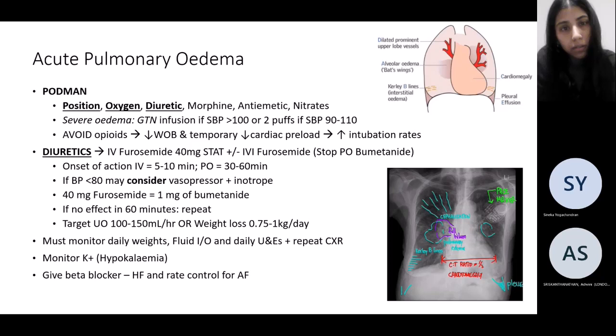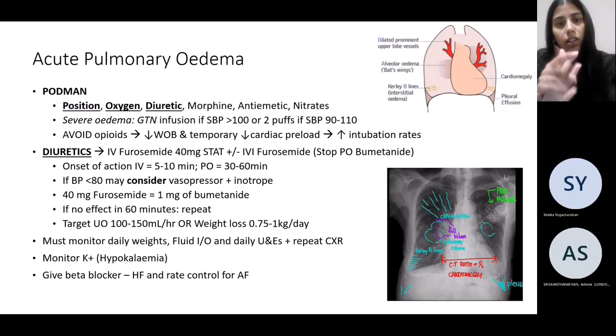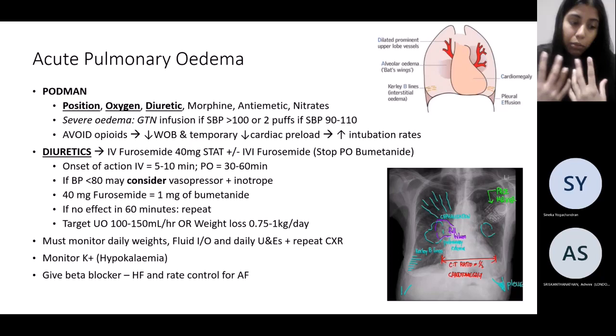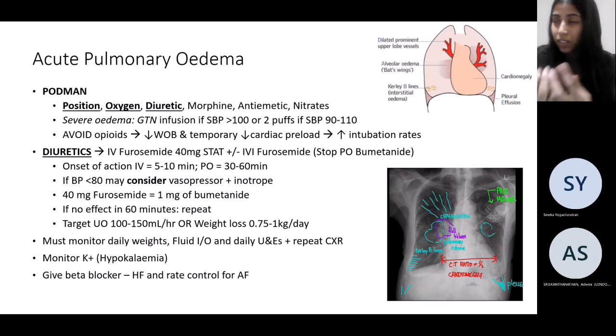Management for pulmonary edema — a useful mnemonic is PODMAN: positioning, oxygen, diuretic, morphine, antiemetics, and nitrates. Positioning: sit the patient up at about a 45-degree angle, which can also help by having their legs down. These patients present acutely short of breath, which is very distressing.